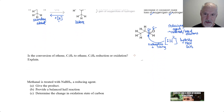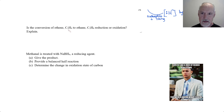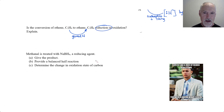Let's look at a couple of questions on reducing organic chemicals. My first one: is the conversion of ethene, C₂H₄, to ethane, C₂H₆, reduction or oxidation? Well, if we look at the two chemical formulas, we can see that we've gained hydrogen. We can recall that's one of our signs of reduction.